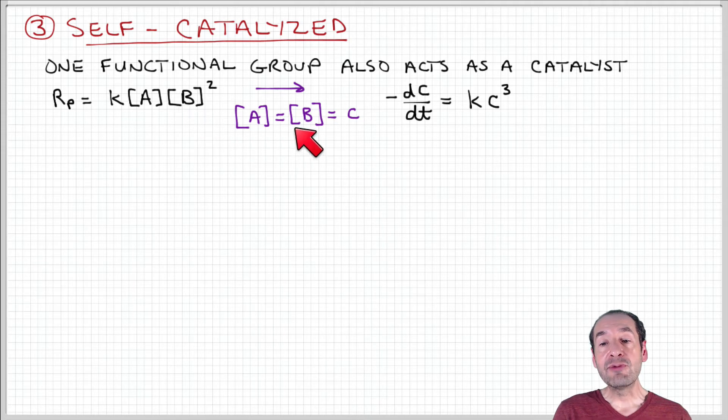And again, if we make these concentrations equal because we have equal stoichiometry, then we obtain a slightly different differential equation for our rate law, where we have dc/dt equals kc³.